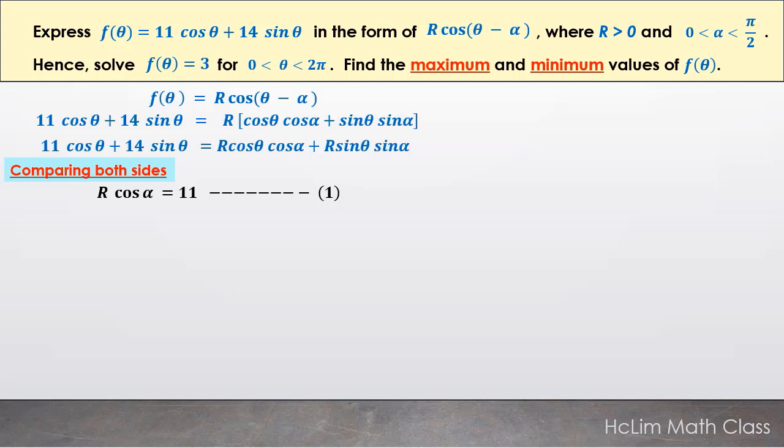For the coefficients of cos θ, we will have R cos α = 11. And for the coefficients of sin θ, we have R sin α = 14.